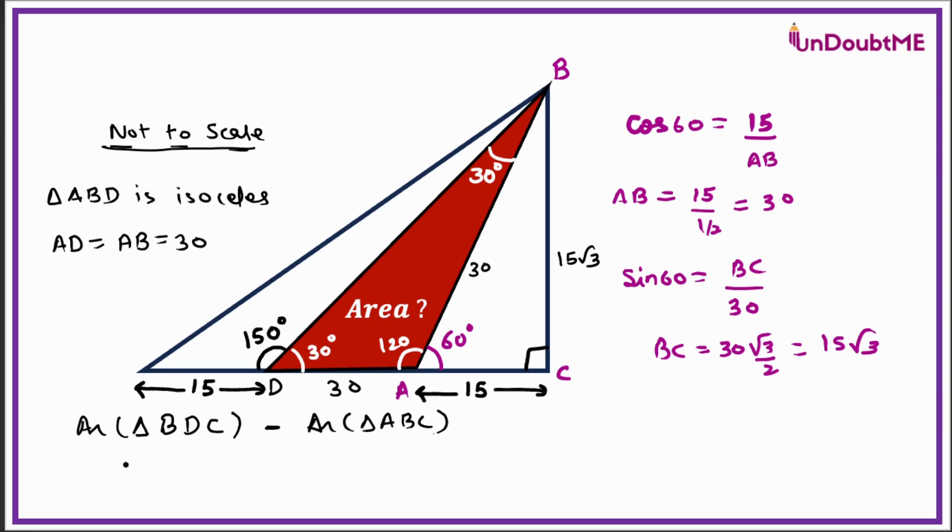Let us do the calculation. Area of triangle BDC will be 1/2 × base is 30 plus 15, that is 45, times 15√3, minus area of triangle ABC will be 1/2 × 15 × 15√3. Now here if you look at the values, there are few common terms like 1/2 is common, 15√3 is common. Then from 45 and 15, even 15 is common, so I'll take that out. 45 is 15 times 3, so 3 will be left minus 1.